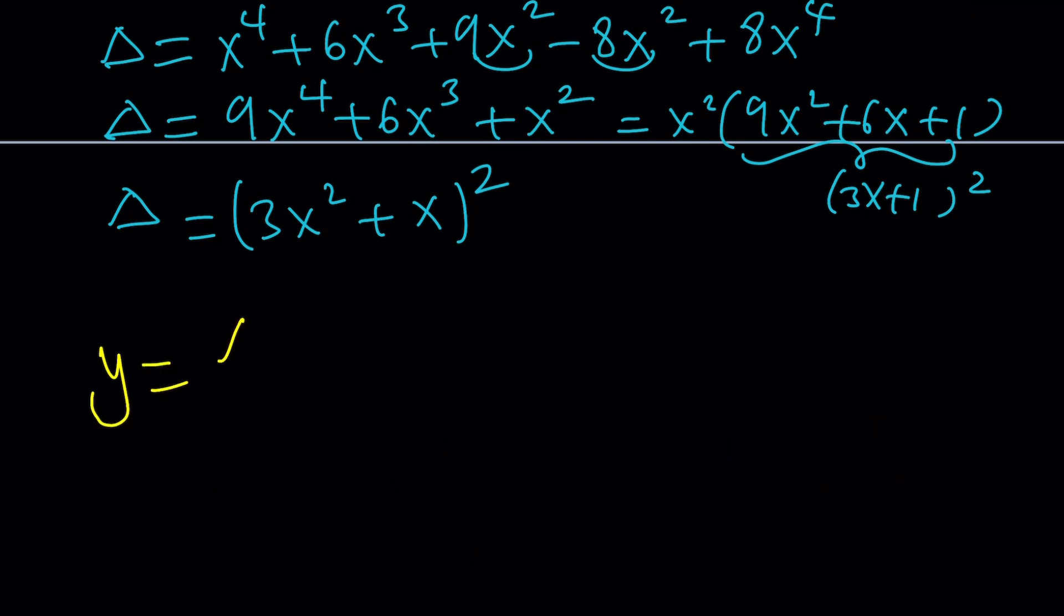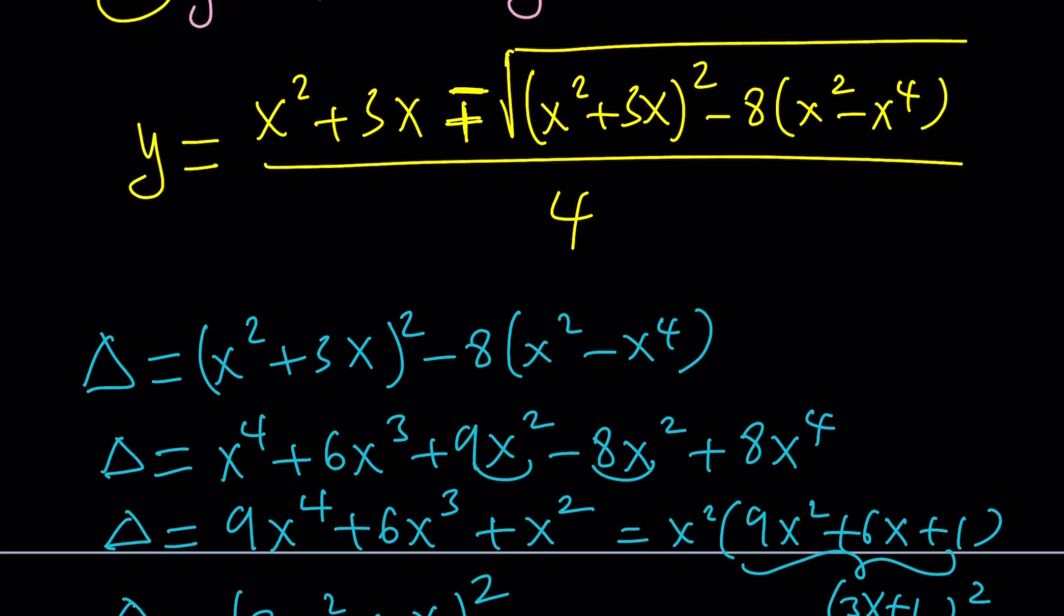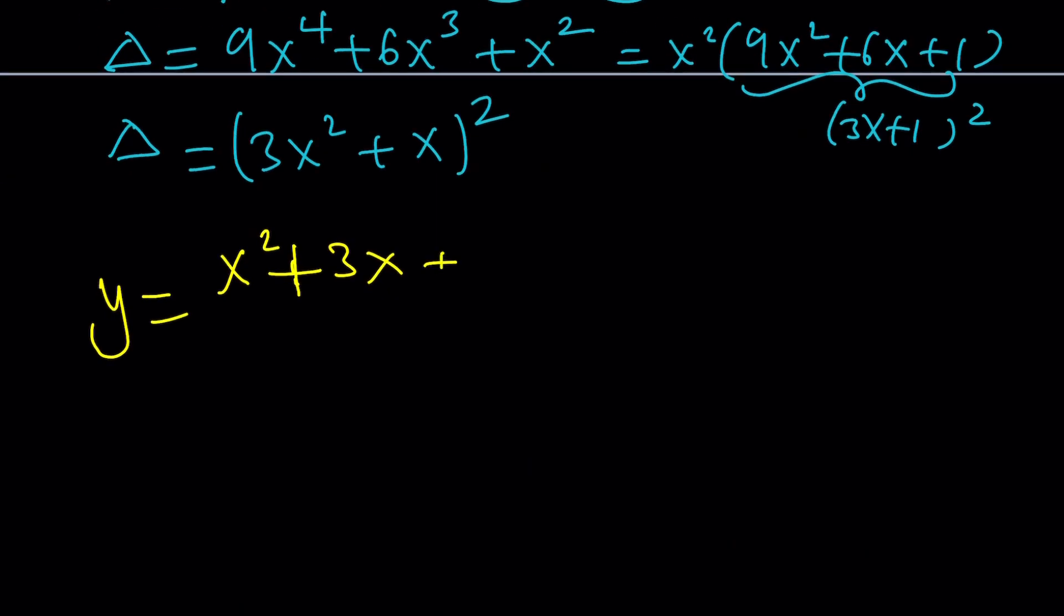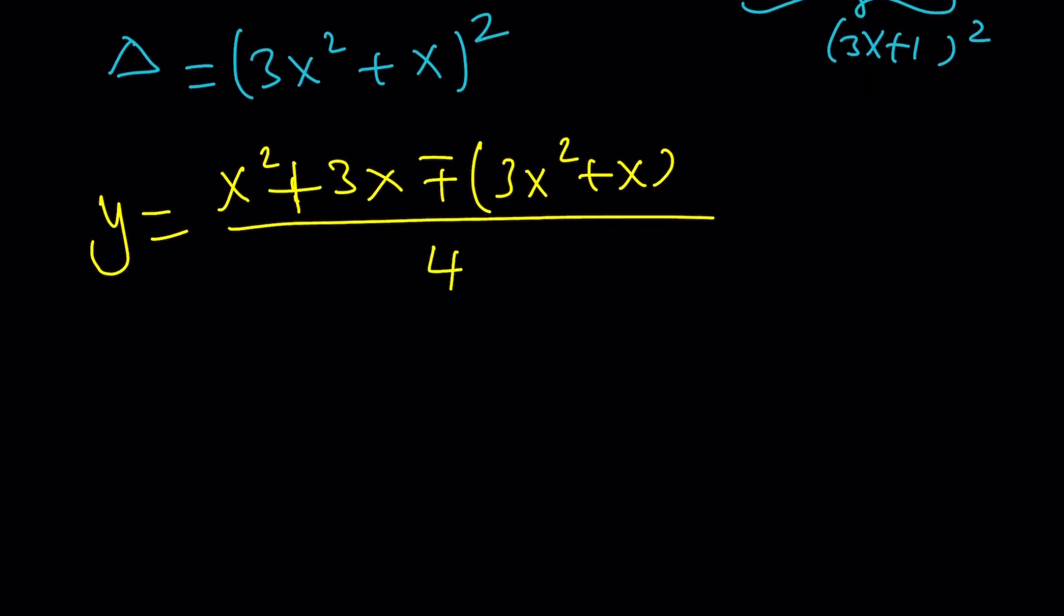So now, y is going to be x squared plus 3x. Uh-oh. x squared plus 3x, and then plus minus, plus minus, discriminant, the square root of delta, which is 3x squared plus x. I still should use parentheses. And then all of that is divided by 2 times 2, which is 4. Awesome. Now, notice that this simplified nicely, which means we're going to have a nice answer, of course, because polynomials are nice, right?